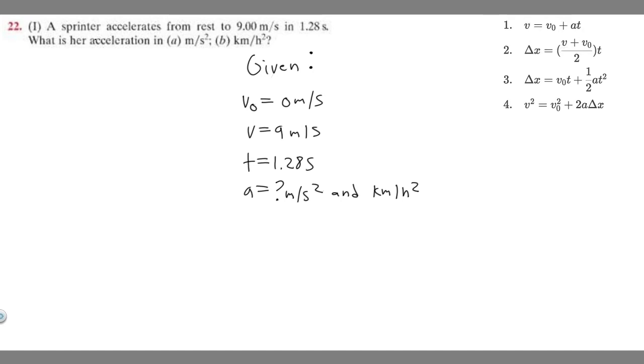So v, which is 9, equals v₀, which is 0, plus a, which is what we're trying to solve for, times time, which is 1.28 seconds. So 9 equals 1.28a. To solve for a, divide by 1.28.